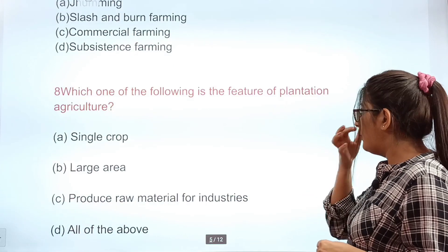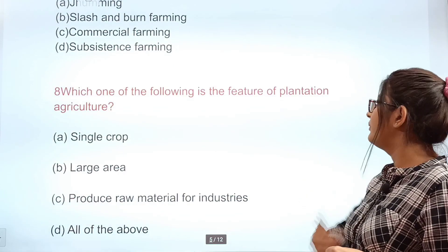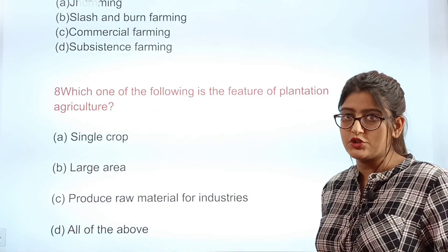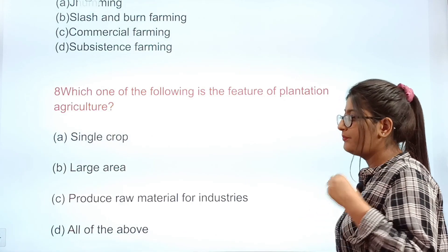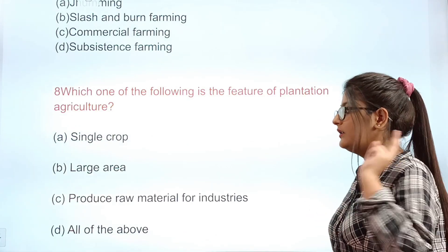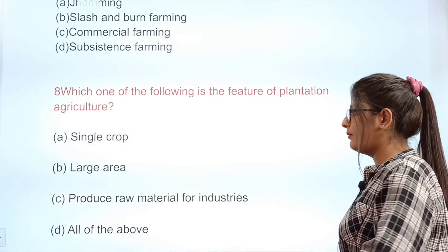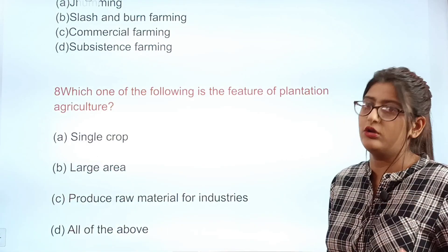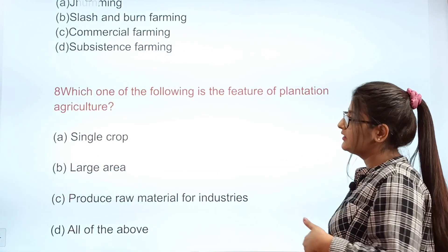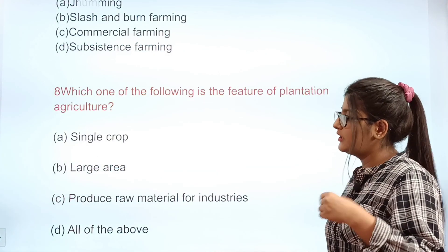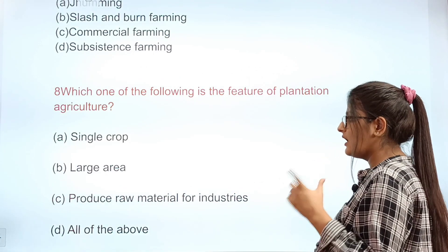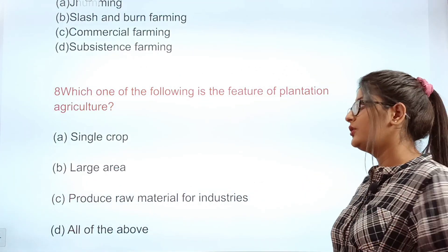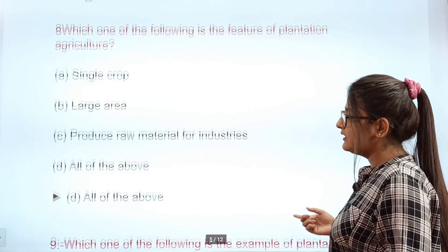Question: Which one of the following is a feature of plantation agriculture? Options: A single crop, B large area, C produces raw material for industries, D all of the above. The correct answer is D — all of the above. All three are features of plantation agriculture.